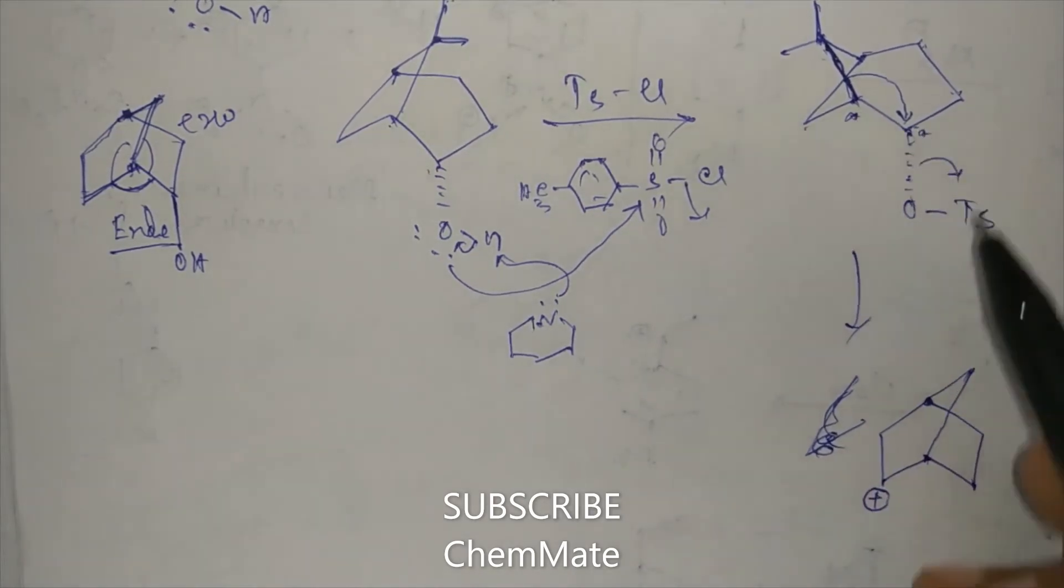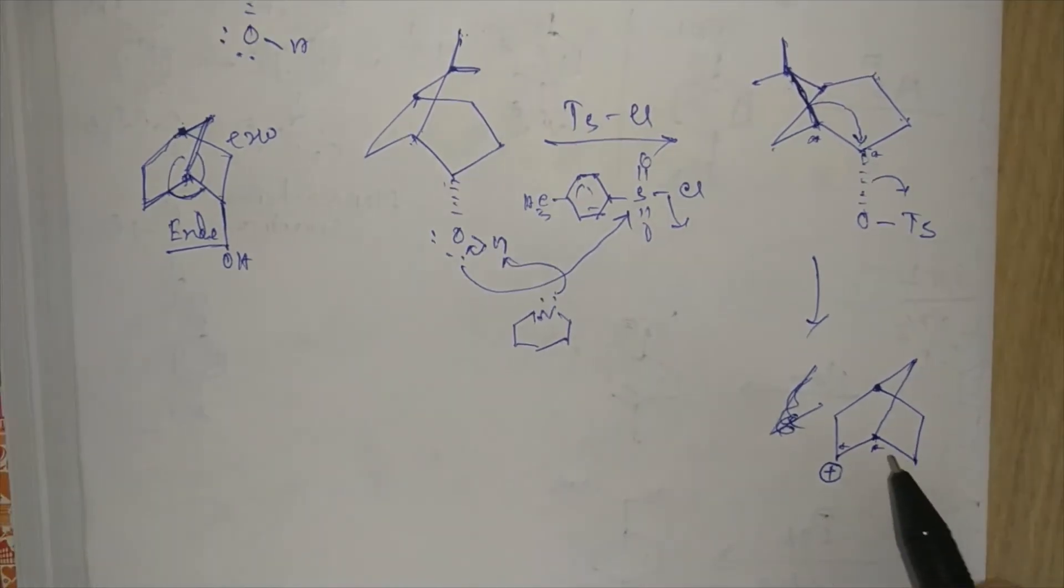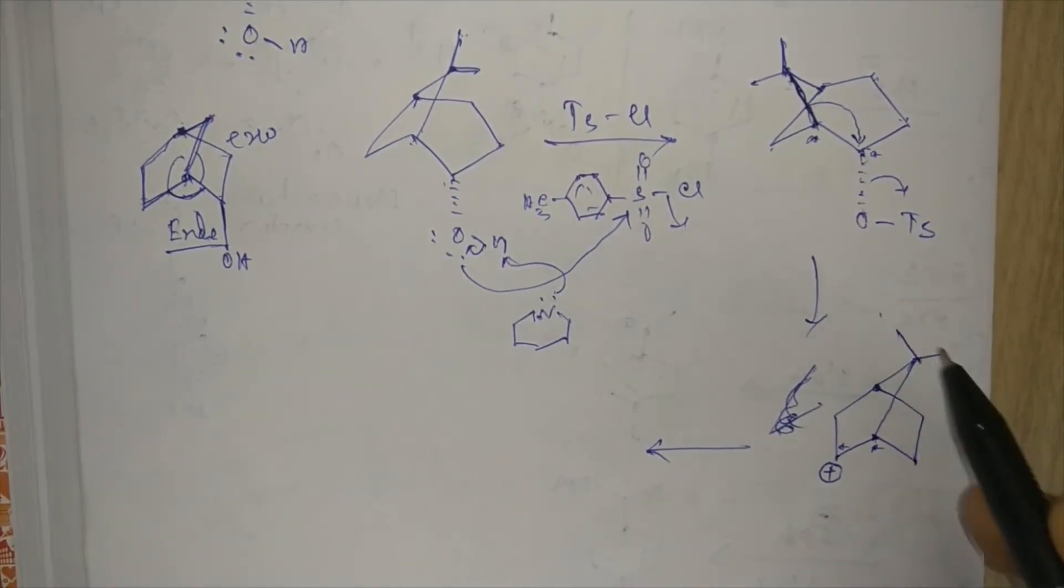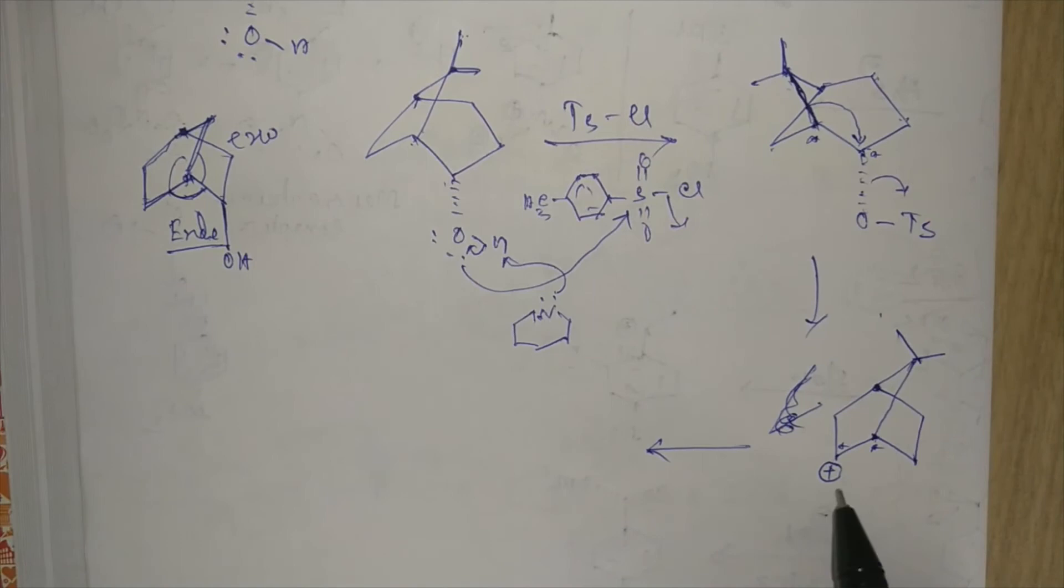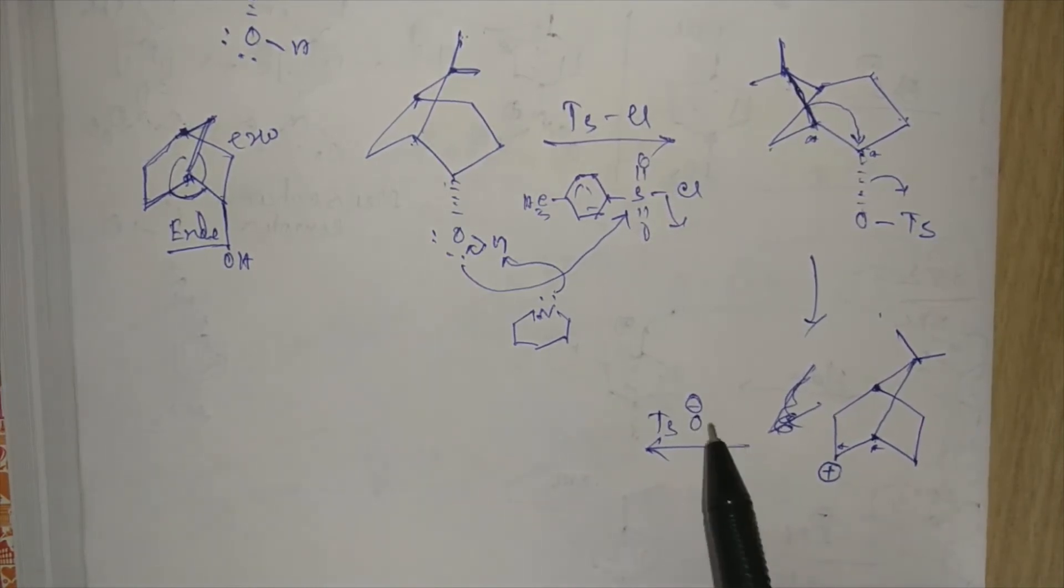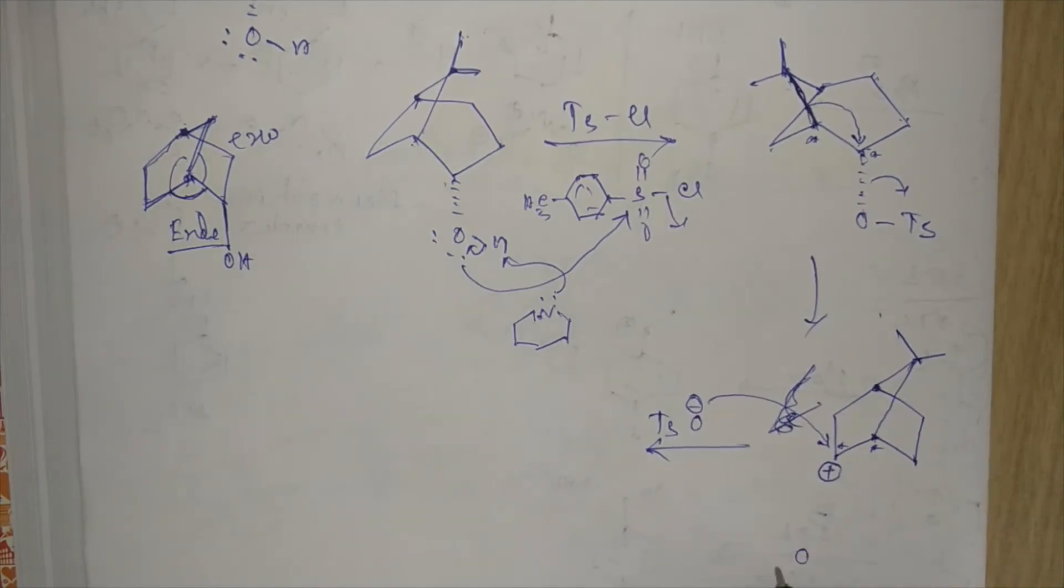So here the star carbons are this and this. This bridged bicyclic system will be formed, and two methyl groups are here, CH3, CH3. Now it has planar geometry, and there are two probability that OTs group will attack into this carbocation.